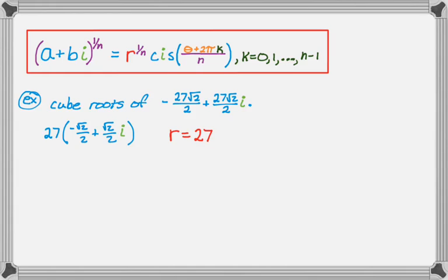So in this case, r is actually 27. You could calculate it by doing the square root of a squared plus b squared, but that's a lot of work. And we already know what it is. And then the angle I recognize is 3 pi over 4. And then, obviously, cube roots means that n is equal to 3. So I actually know r, theta, and n. And that's all I need.